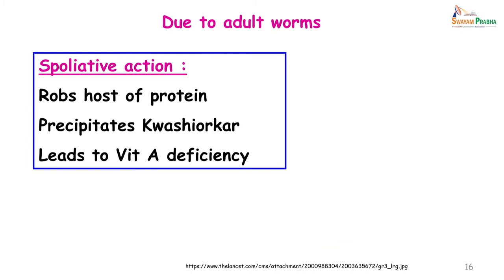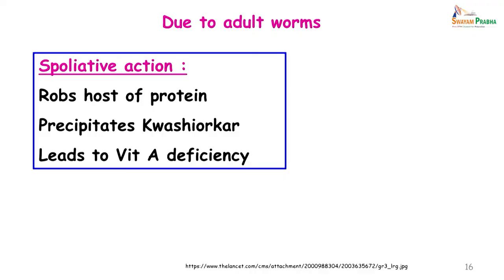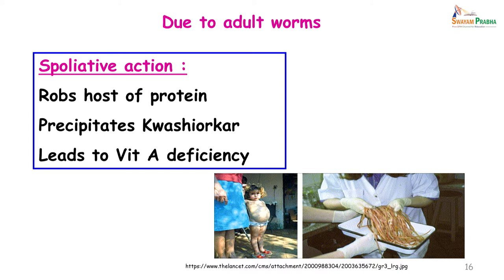The spoliative action is usually seen in young children who have a massive infection of roundworms. It will rob the host of proteins. In an adult it may not be noticeable, but in children it precipitates kwashiorkor and also leads to vitamin A deficiency and night blindness. This is a child who developed kwashiorkor as a result of roundworms, and when operated upon, this is the number of worms they took out from her intestine.